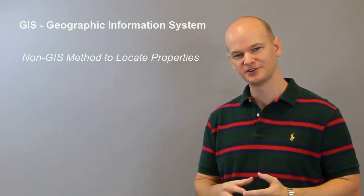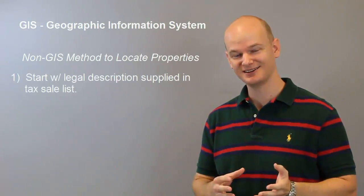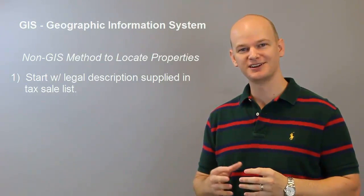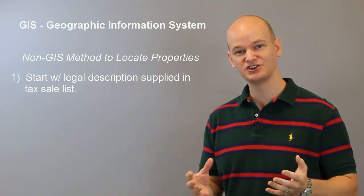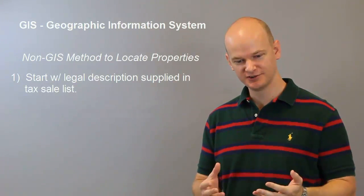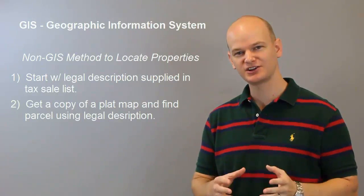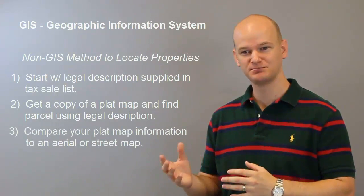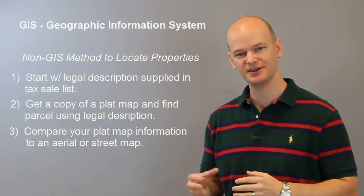So what you'll do is you'll take that legal description. If it's a metes and bounds description, good luck finding it unless you're a surveyor. Your best case scenario for using the old school method is finding a piece of property in a subdivision. So you might say the Jones subdivision, lot one, block one. You look at block one, lot one on the plat map of the Jones subdivision, and you try to transpose it onto some sort of mapping service — whether it's Bing, Google, Yahoo — to figure out exactly where that property is.